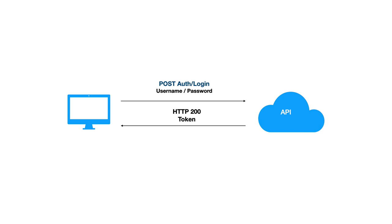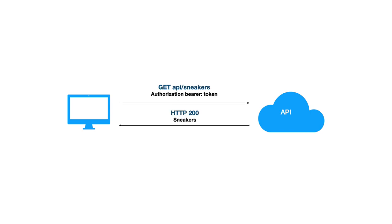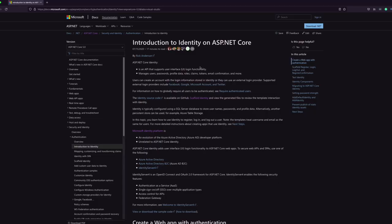If we take a look at the authentication process from a high level view, the API is supposed to get user login credentials from the client's application. If the API validates the credentials, it returns an access token to the client. Any further requests from the client will require this token. To validate user credentials, we will use ASP.NET Core Identity.